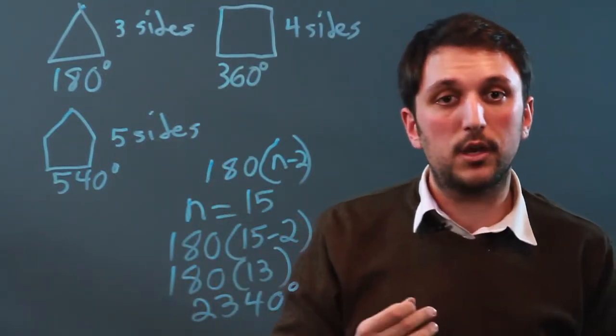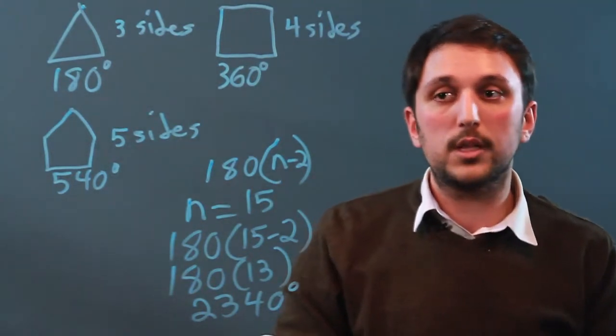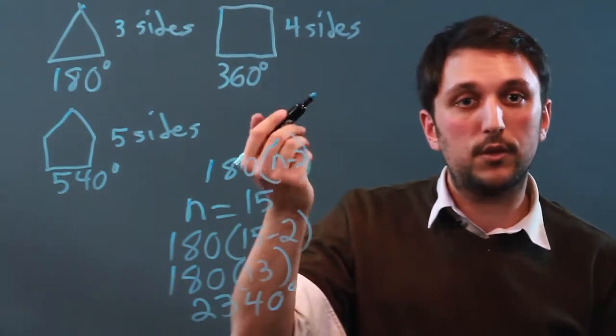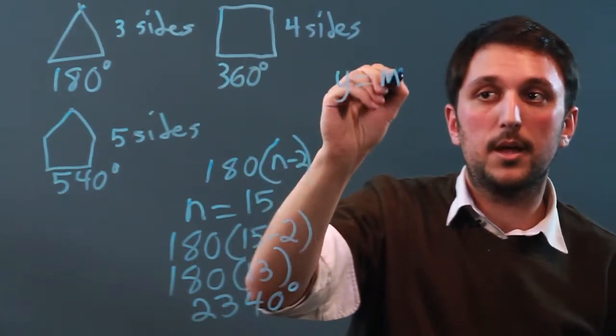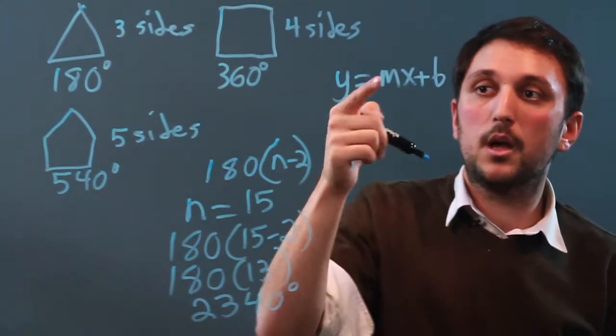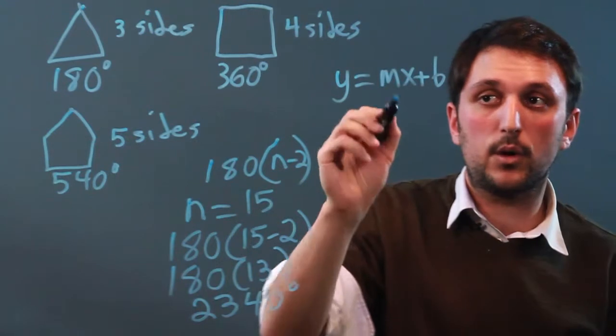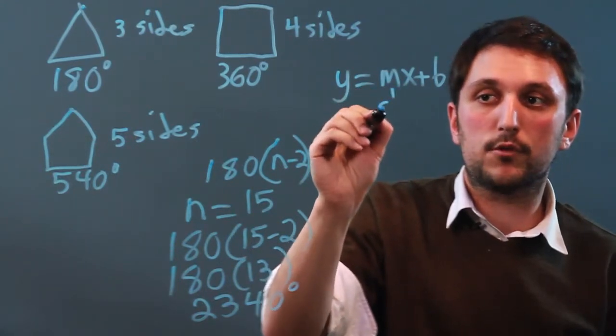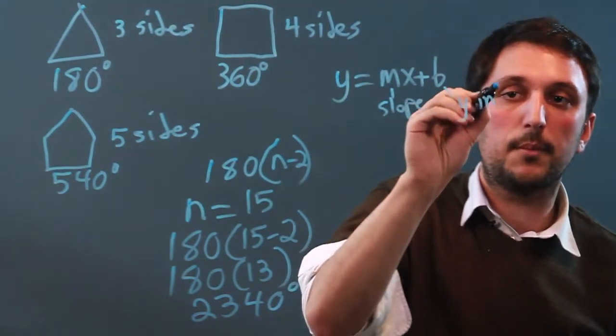Coordinate geometry, which is part of algebra 2, is another very good example. When you're dealing with a graph and you have the slope-intercept form of y equals mx plus b, y stands for your y-coordinate, x is your x-coordinate, m is your slope, and b is your y-intercept.